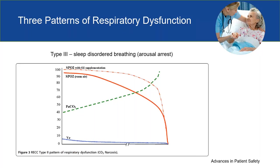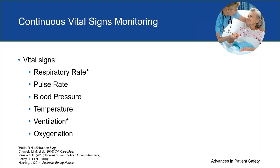Early detection of patient deterioration depends on accurate and continuous monitoring of ventilation. As you can see from the three patterns, oxygenation is one of the later signs of respiratory distress. On the general care floor, we usually measure all these parameters, but the most sensitive measure of patient deterioration is really ventilation status.